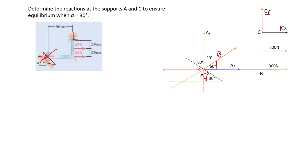So we have this force, and we can now resolve it. Resolving on the x-component, A is moving in the positive x direction, so we get Ax = A cos 60°. And Ay will be A sin 60° — very simple. Ay is the vertical component and Ax is the horizontal component.